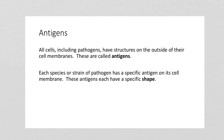All cells, including pathogens, have structures on the outside of their cell membranes called antigens — a super important key word that will come up again particularly when we talk about antibodies and the immune system. Every species or strain of a pathogen, such as different types of bacteria, has specific antigens on its cell membrane with a very specific shape. Just as in B2 we talked about enzymes and substrates fitting together like a lock and a key, antibodies are going to fit onto antigens in the same way.